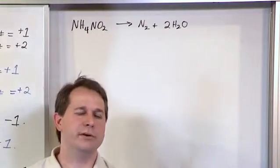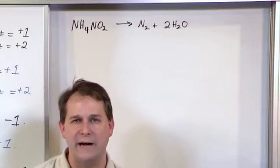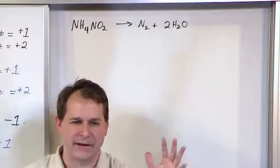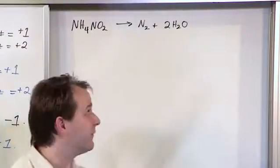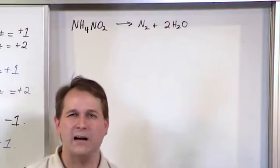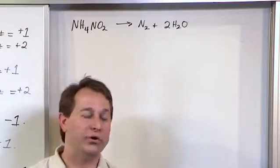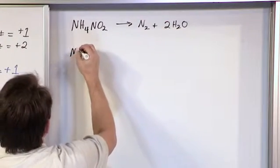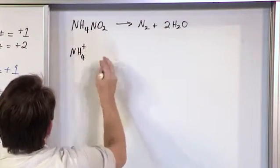And that means that when you put this in solution and actually do the reaction, you really don't have a compound that's NH4NO2. You don't really have that thing joined together. What you really have is NH4 ions floating around and NO2 ions floating around.